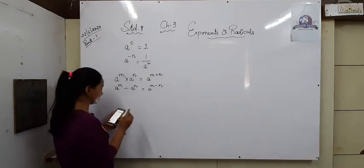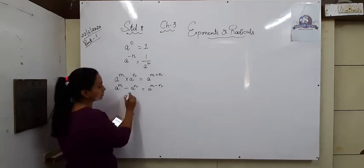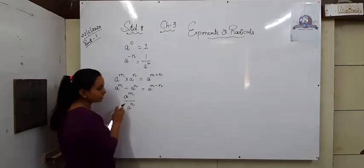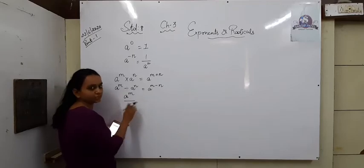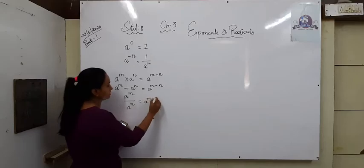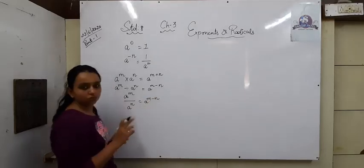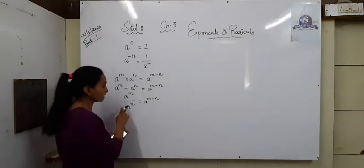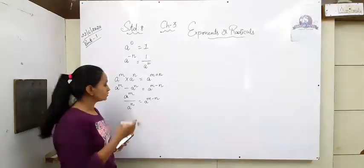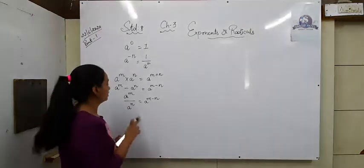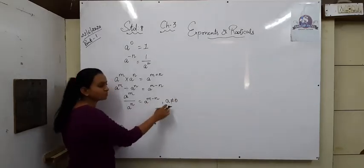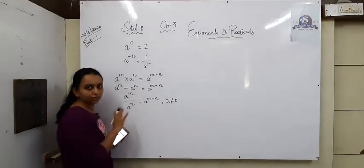Next, A raised to m upon A raised to n — here the numbers given are the same, powers are different, but there is division between them. So here it becomes A raised to m minus n. The condition here is: A should not be zero, because if the denominator becomes zero, the number becomes not defined. So the denominator can never be zero. These two forms are the same, just written differently.